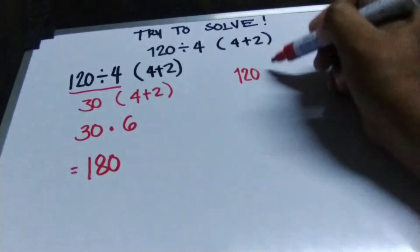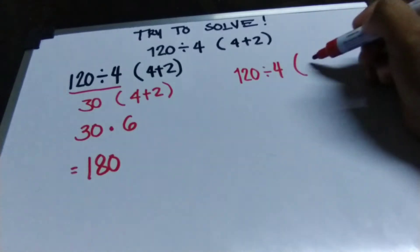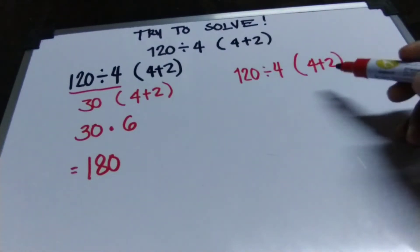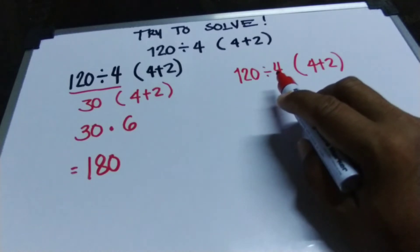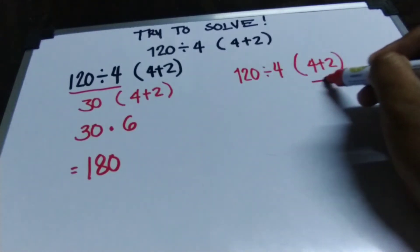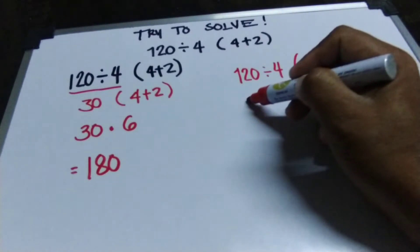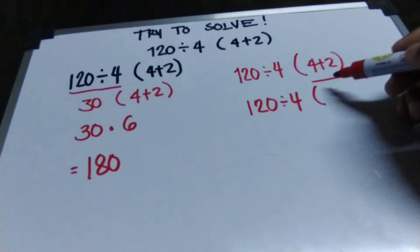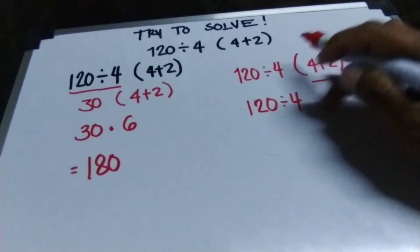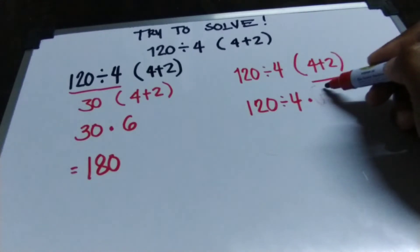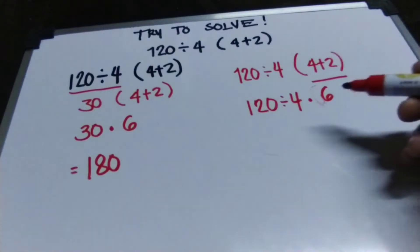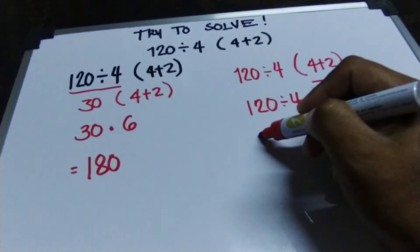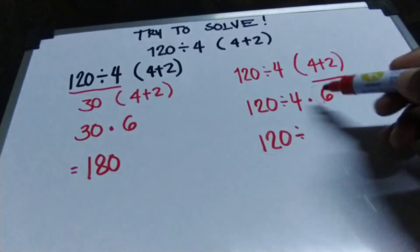The other solution: 120 divided by 4 times 4 plus 2. So for the next solution, I will write 120 divided by 4 times 6.